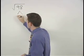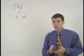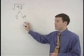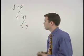98 is 2 times 49, and if you know your perfect squares you'll recognize 49 as 7 times 7.